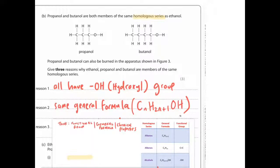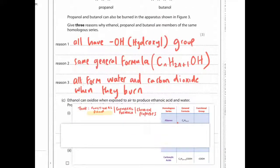That is the general formula for all alcohols. Finally, they all form water and carbon dioxide when they burn. So that's the chemical property. So we've dealt with functional group, they all have a hydroxyl group, general formula CnH2n plus one OH, and chemical properties as well.